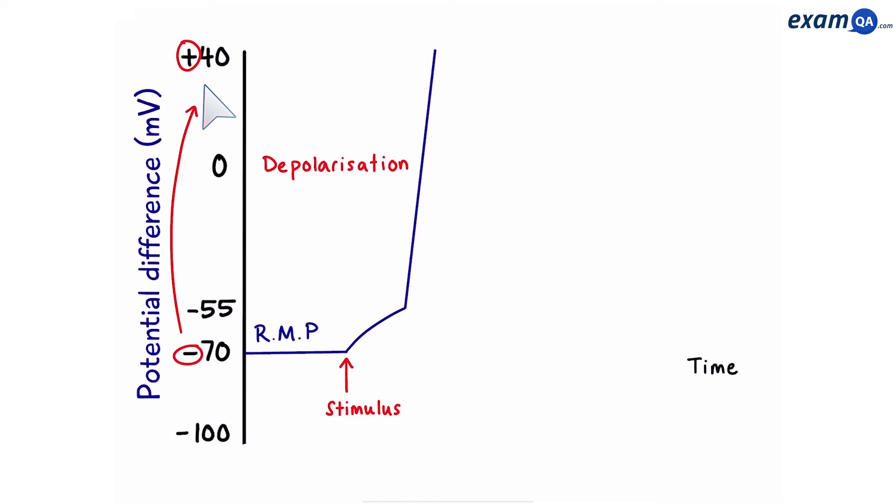Once we get to plus 40, all those extra sodium channels that opened up spontaneously close. And instead, potassium channels open up. When potassium channels open up, the potassium ions begin to leave the neuron. They travel down the electrochemical gradient. This causes the inside of the neuron to become negative again. This part is called repolarization, because the poles are going back to their original. From positive, back to negative, inside the neuron.